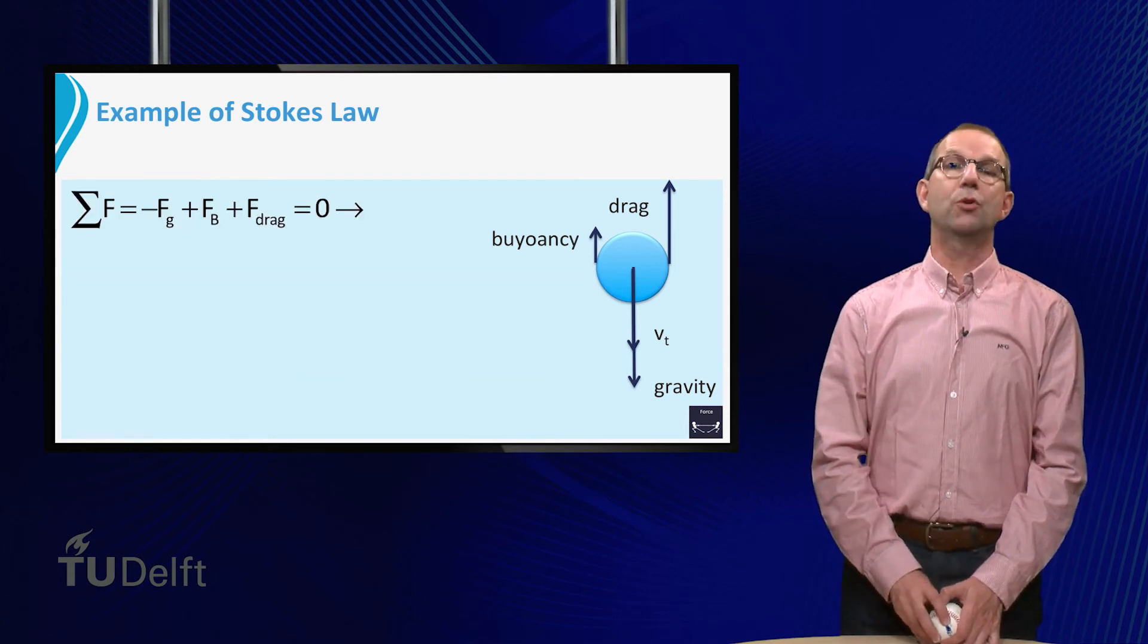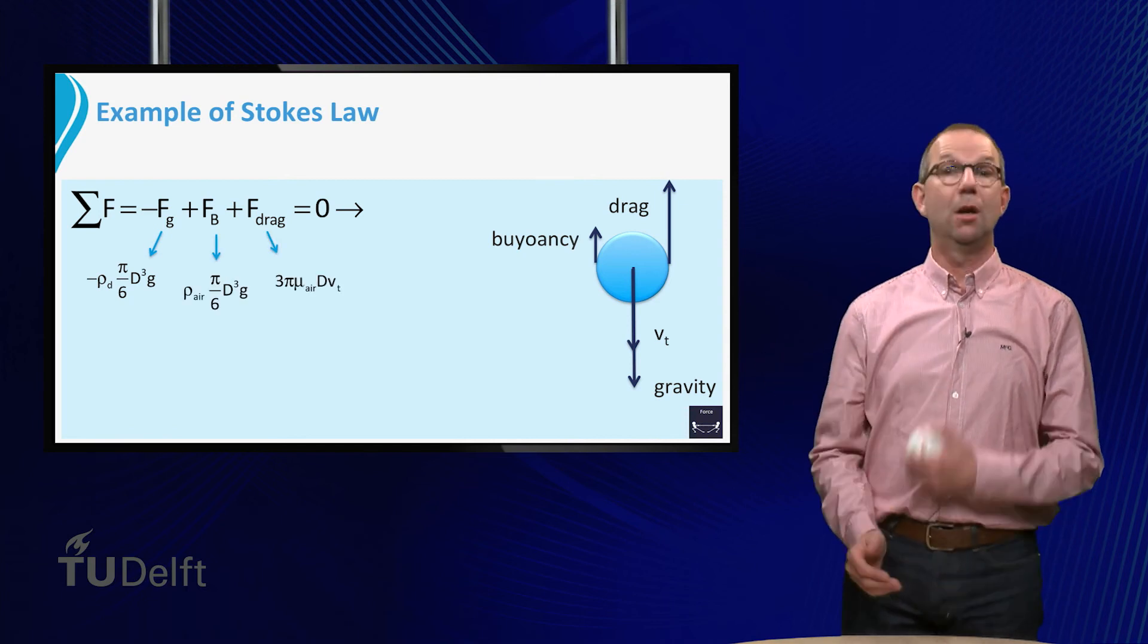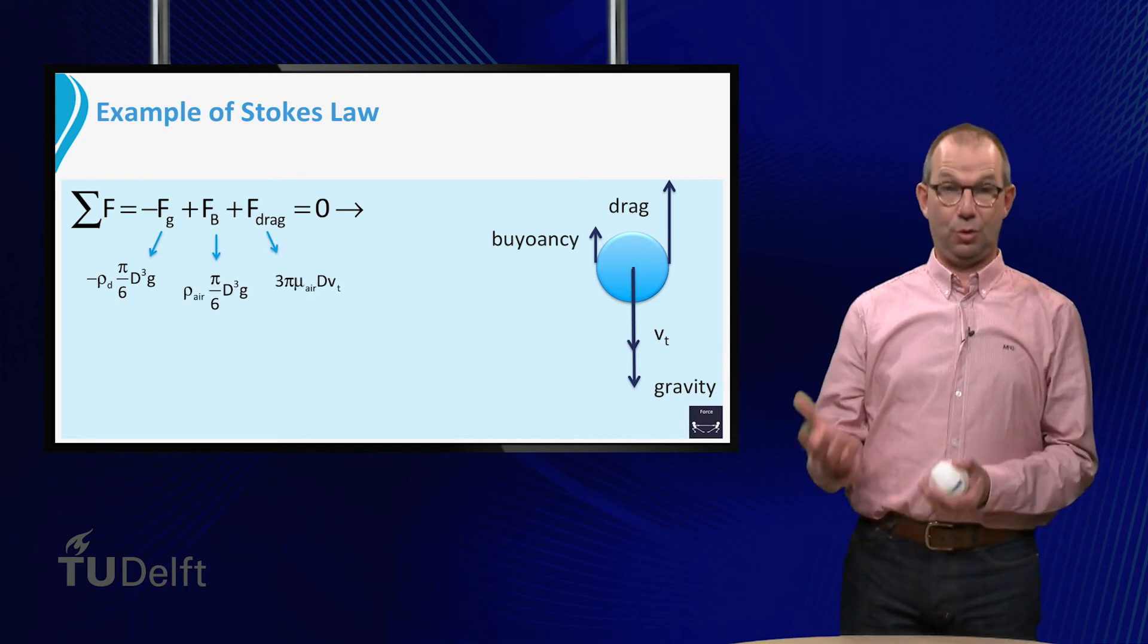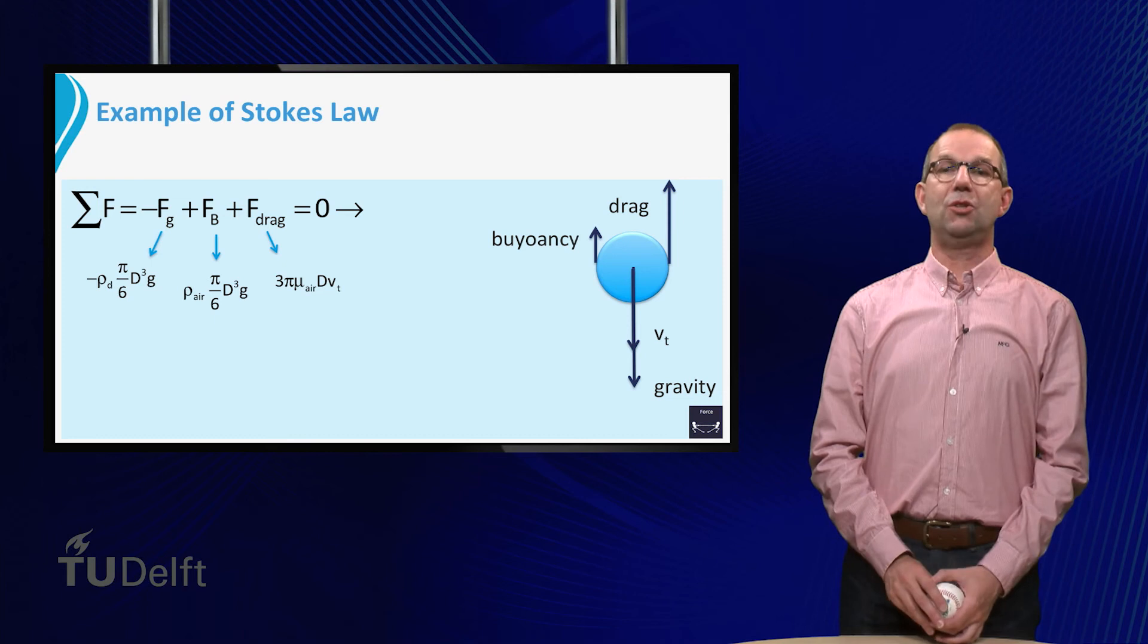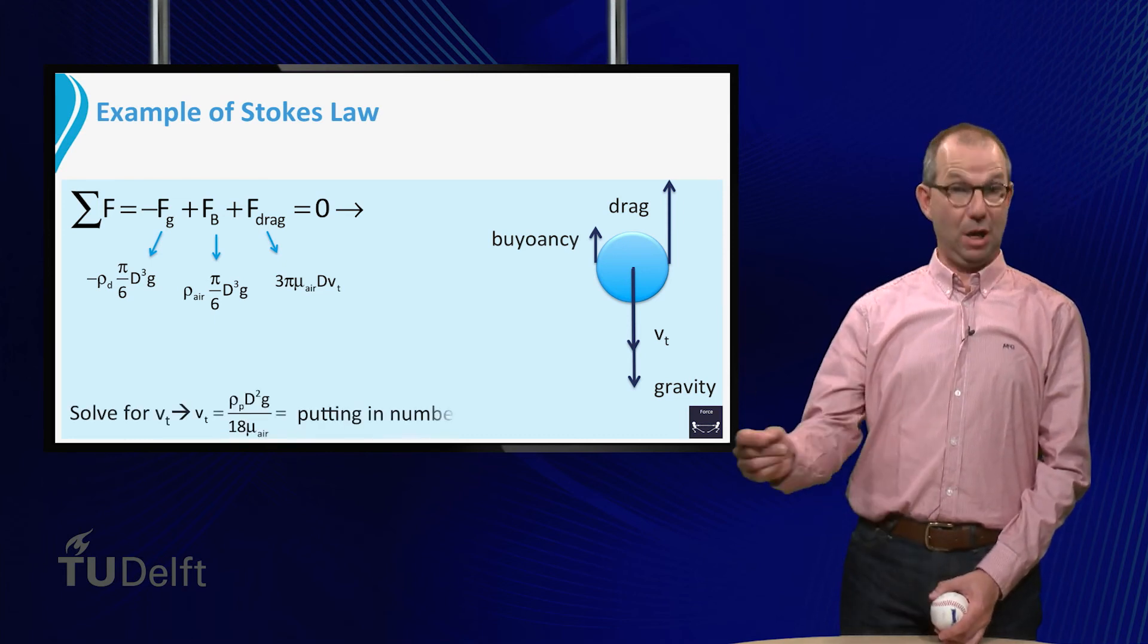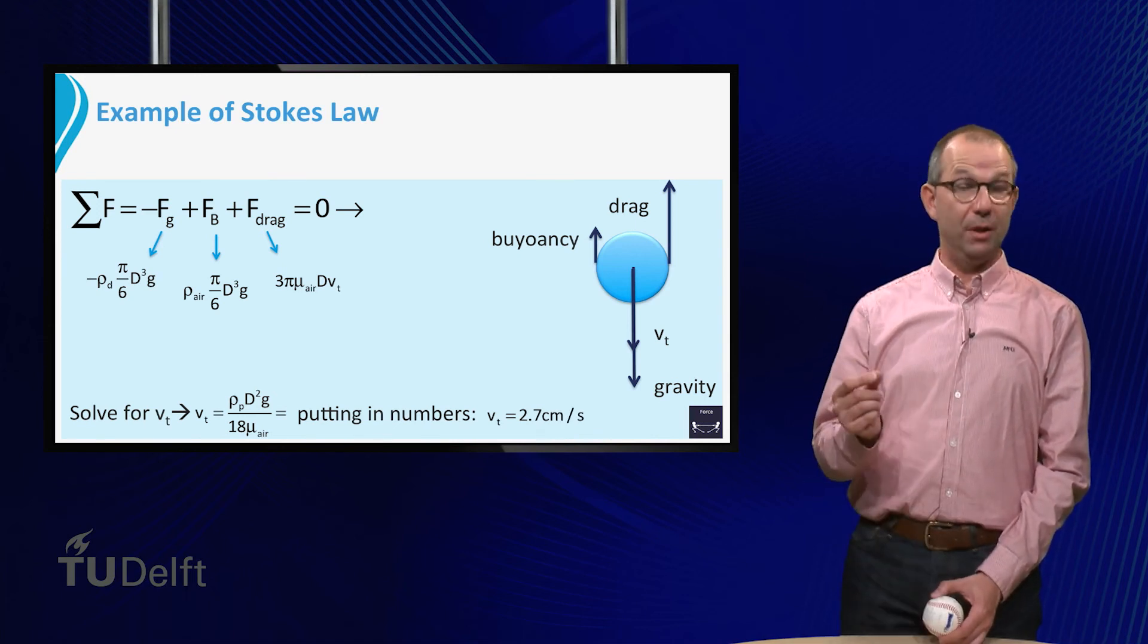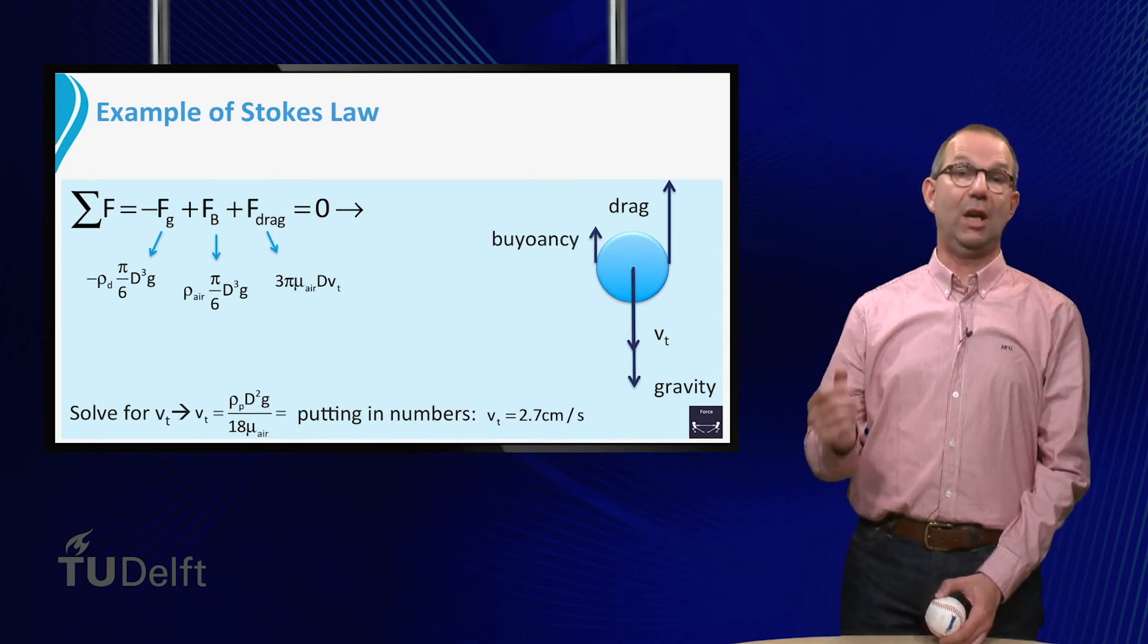Thus, we set the sum of forces to zero and use our formula for gravity, for buoyancy, and for Stokes drag. Next, we solve the terminal velocity from this equation and put in numbers. We find a terminal velocity for our fog droplet of 2.7 cm per second.